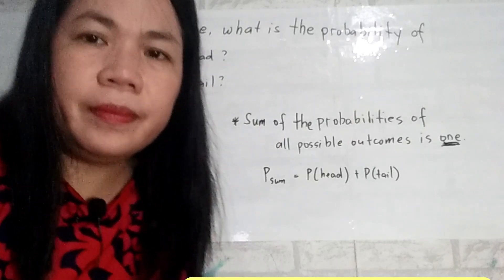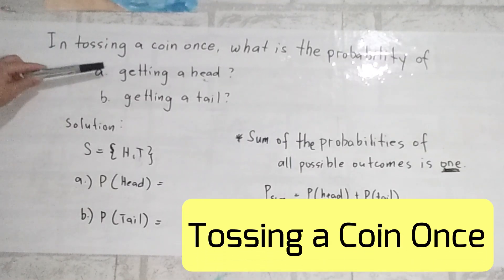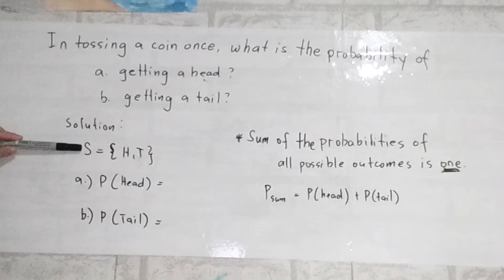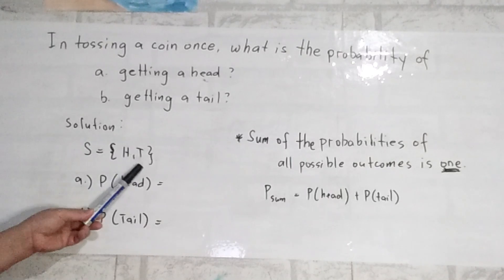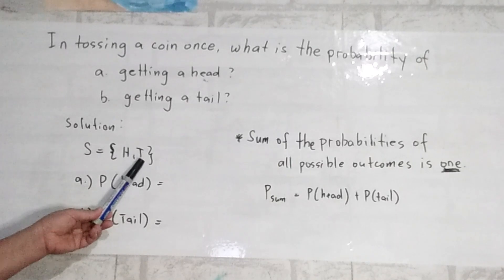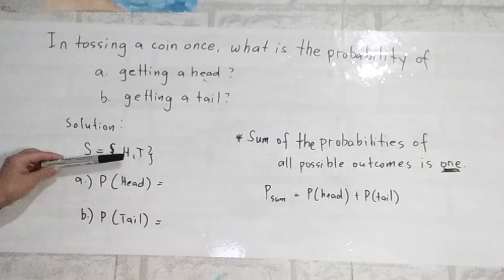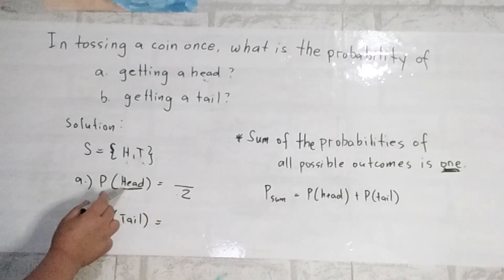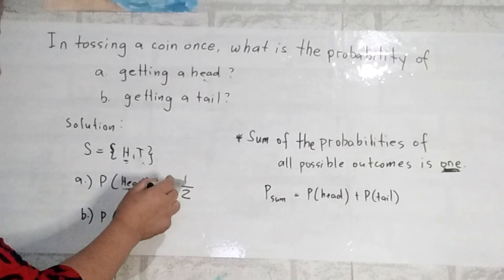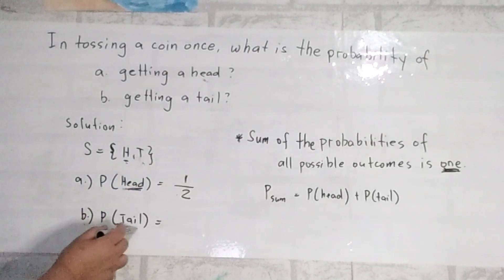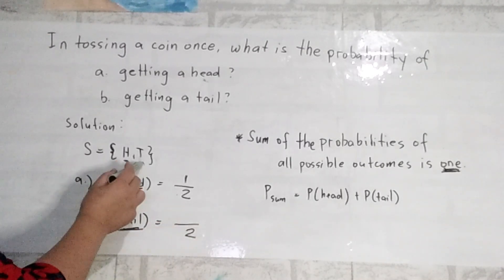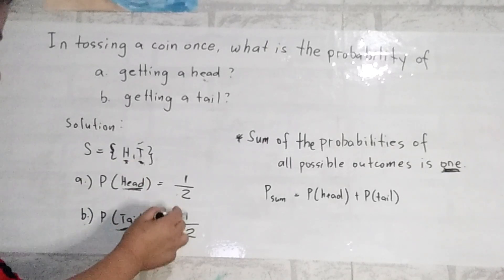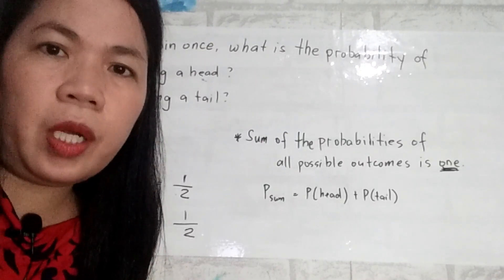Let's have our second problem. In tossing a coin once, what is the probability of getting a head and what is the probability of getting a tail? First, we list all elements of our sample space: H for head and T for tail. The total number of possible outcomes is 2, so our denominator is 2. For getting a head, we have 1 favorable outcome — probability is 1 over 2. For getting a tail, we also have 1 favorable outcome — probability is 1 over 2.